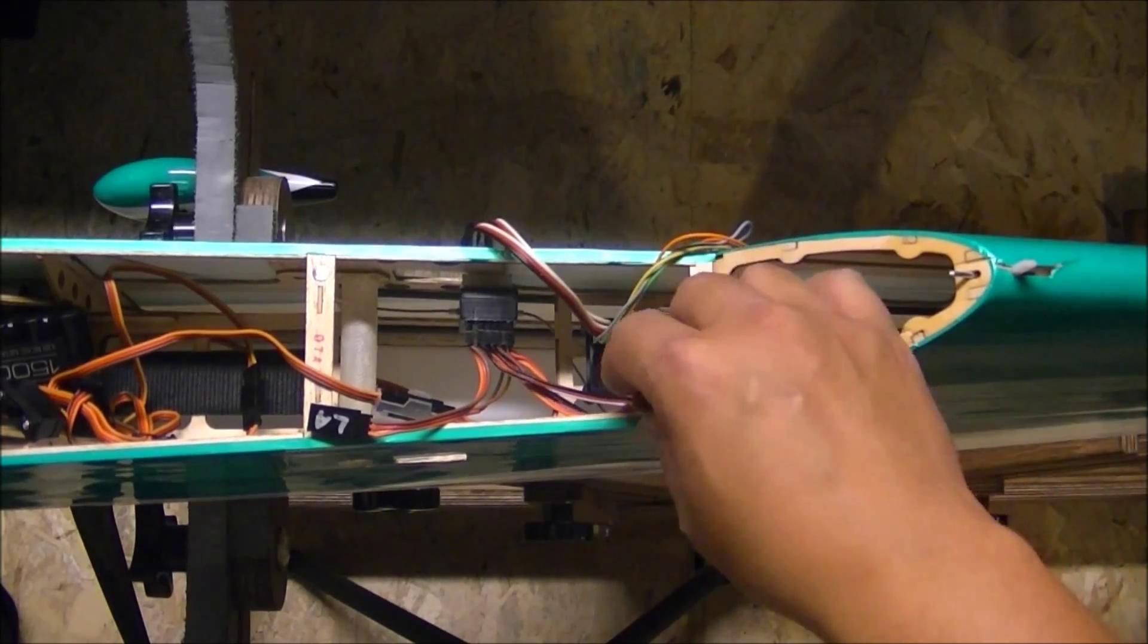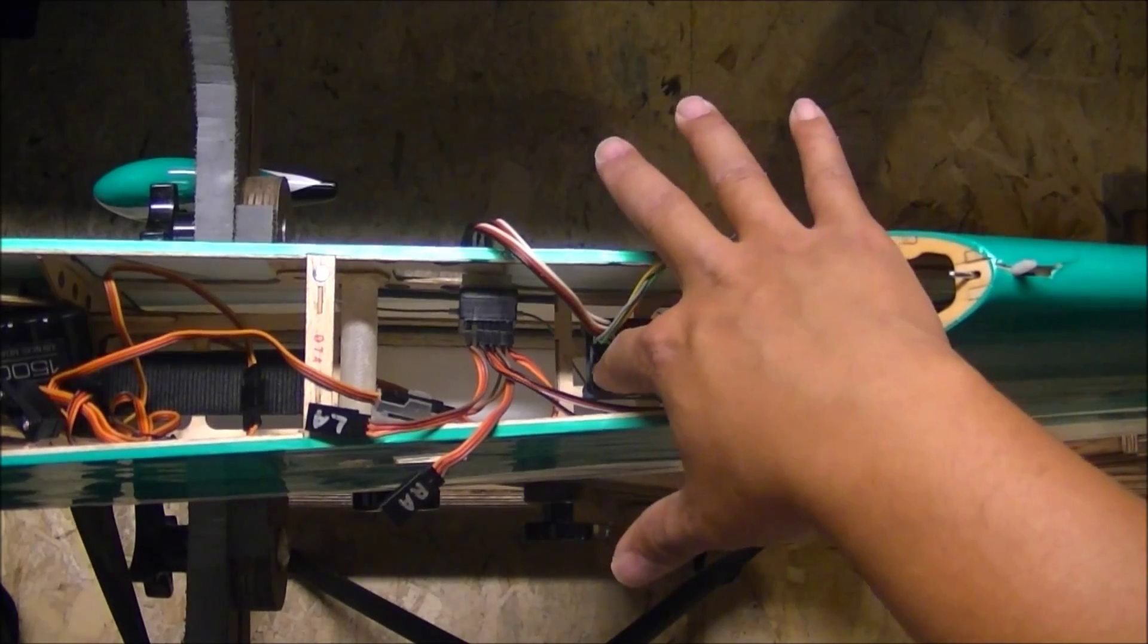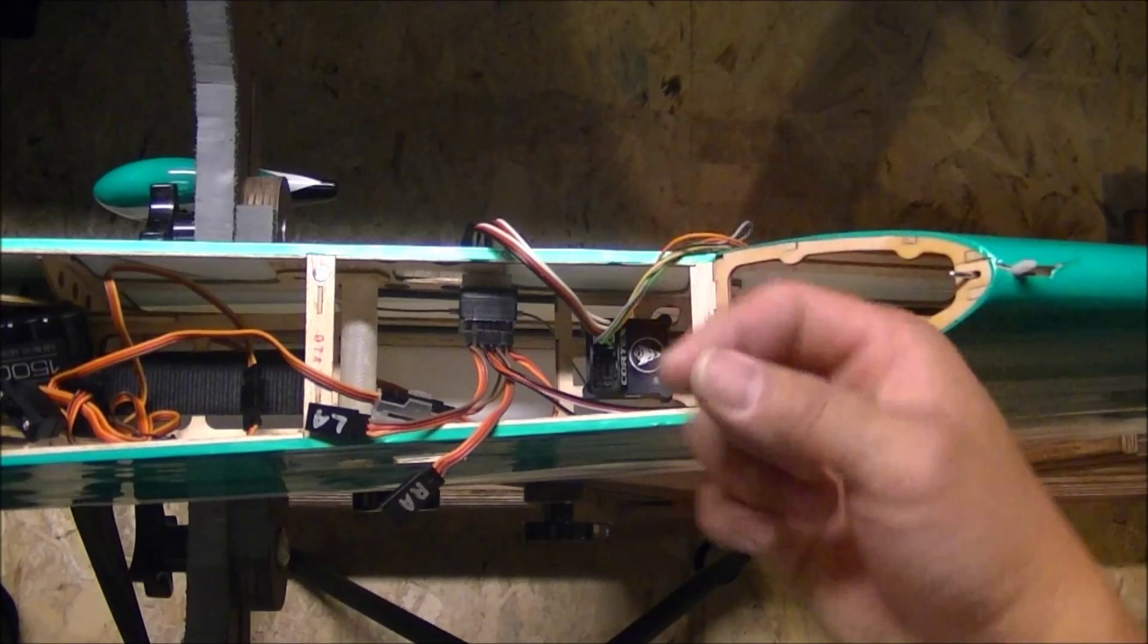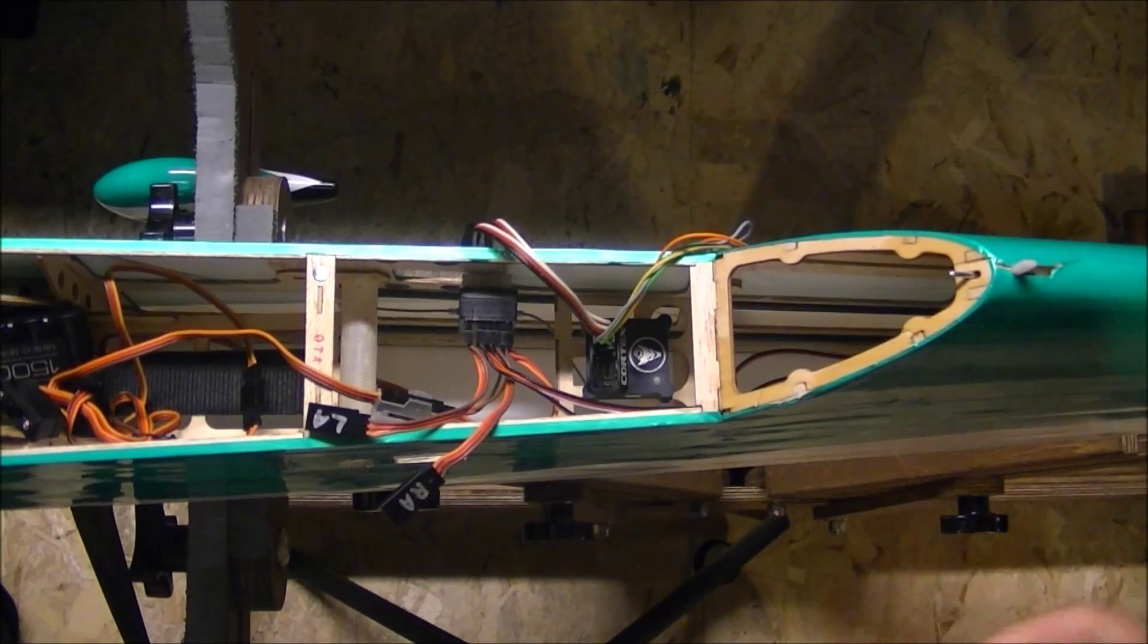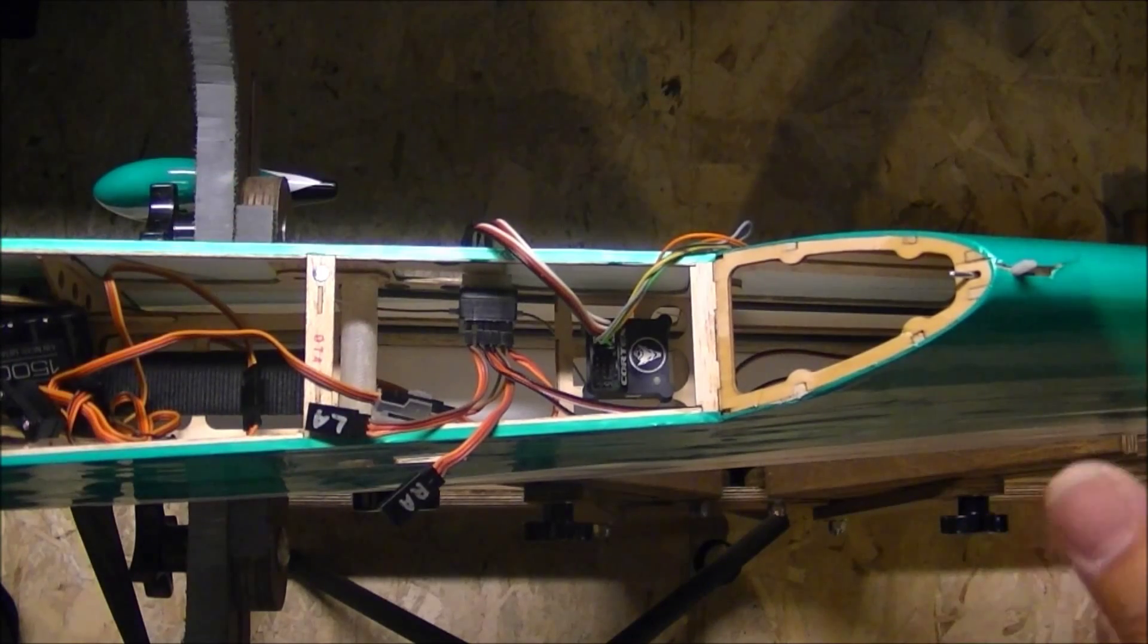When mounting the Cortex, the thing we need to be careful of is we need to make sure that the plug bank, this is the plug bank, faces towards the forward part of the plane and is facing up. You can mount the Cortex in other positions. If you do so, you need to plug it up into the software and you need to teach it in the software which position that it's facing, so the Cortex understands which axis has changed.